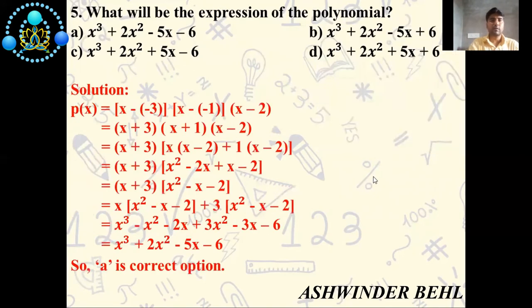Now we will discuss the last question. What will be the expression of the polynomial? There are four options: x³ + 2x² - 5x - 6; x³ + 2x² - 5x + 6; x³ + 2x² + 5x - 6; x³ + 2x² + 5x + 6.